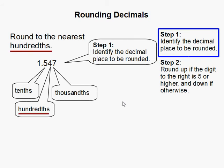Since we are asked to round to the nearest hundredths, 4 would be where we want to round.